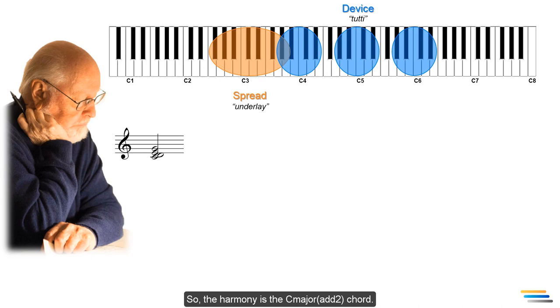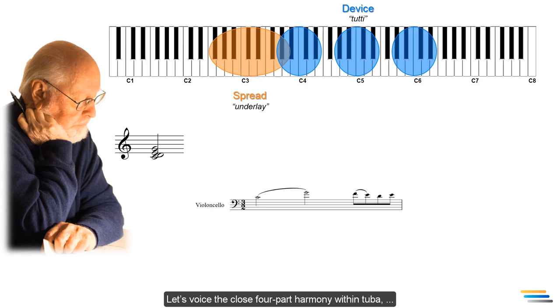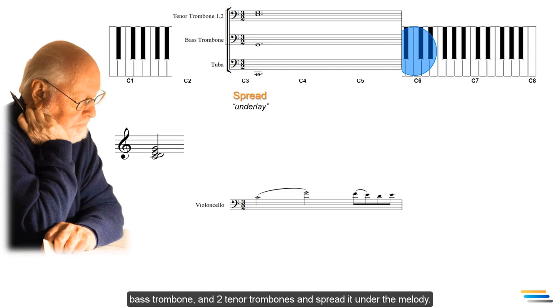So, the harmony is the C major add 2 chord. Let's voice the close four-part harmony within tuba, bass trombone and two tenor trombones and spread it under the melody.